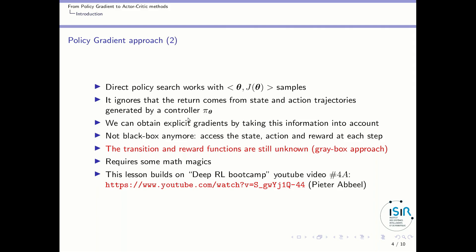We can obtain explicit gradients by taking this information into account. By doing so, the policy search technique won't be black box anymore, because it will use the state, action, and reward along trajectories of the agent at each step. The transition and reward function will still be unknown, so it's not black box anymore — it's a grey box approach, because we have access to a small part of the information. Getting the policy gradient derivation will require some math magic.